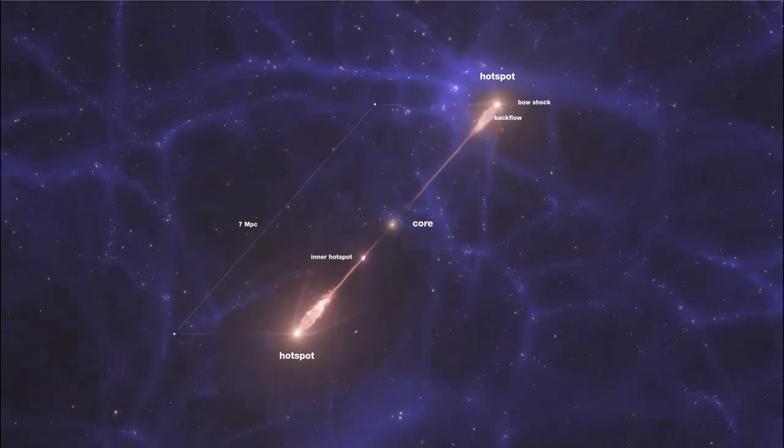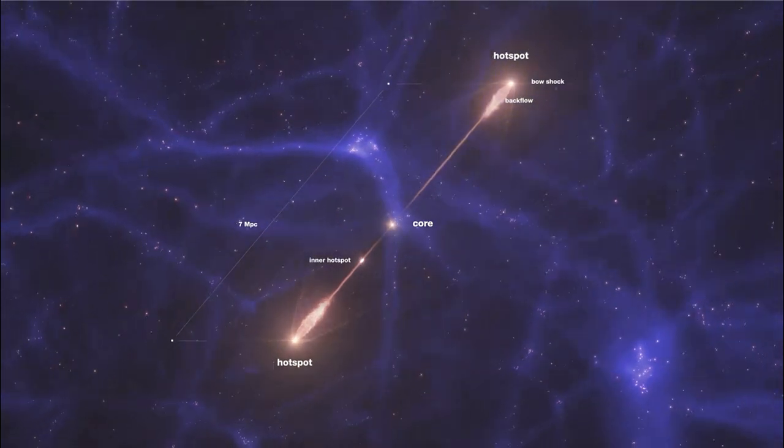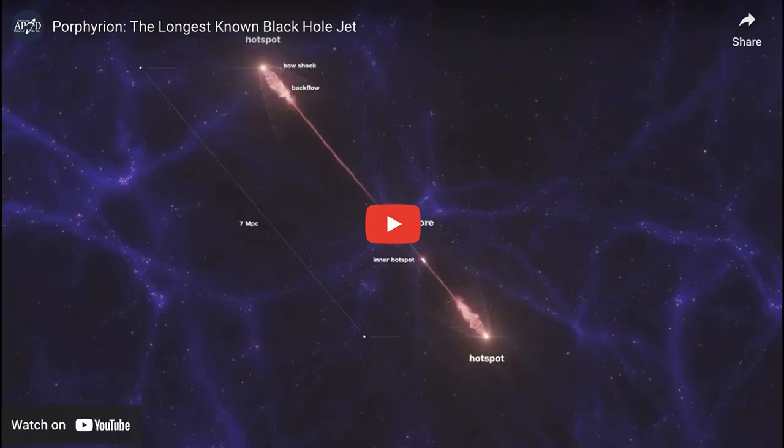So we continue to study these and we start to see how the existence of these jets and how this can affect material way beyond the actual galaxy itself. So how it can affect things well beyond that and even beyond just the local region of galaxies.